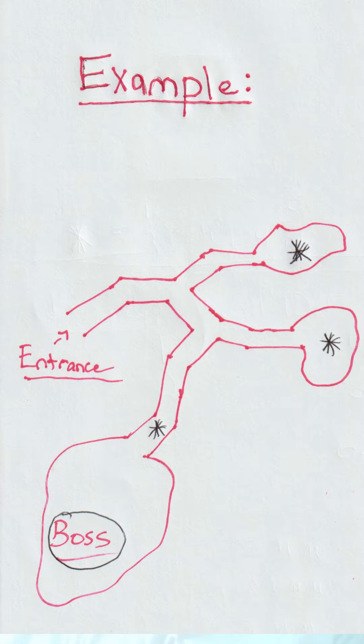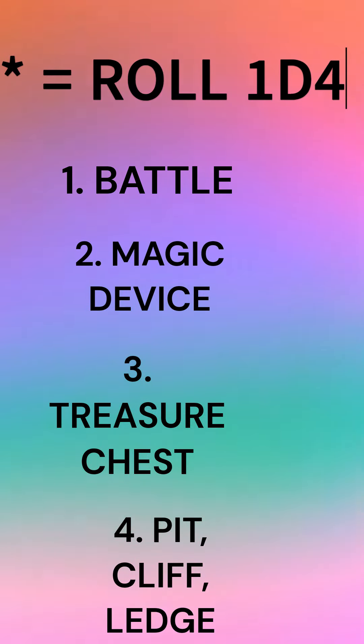Once the group reaches these points in the dungeon, it means that they have to roll the dice. The things that happen while in the dungeon are usually determined by the players during the game with the roll of the dice. I will draw up a chart that looks like this.